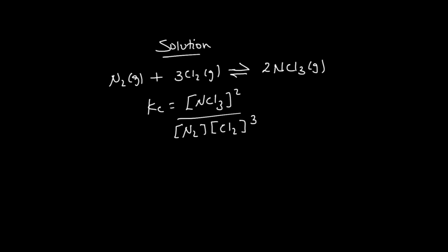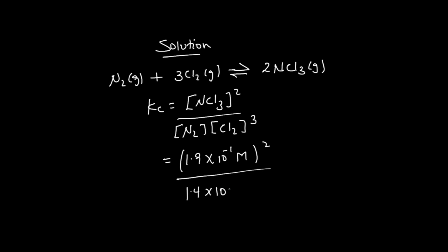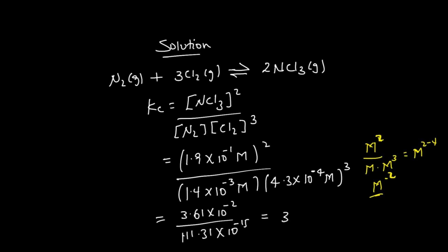Substituting the values: Kc equals (1.9 × 10⁻¹)² divided by (1.4 × 10⁻³) times (4.3 × 10⁻⁴)³.